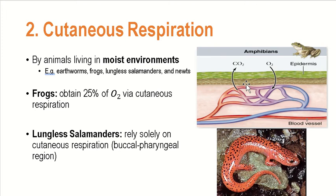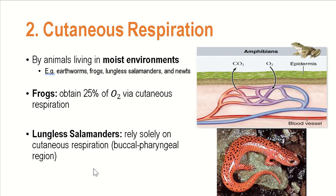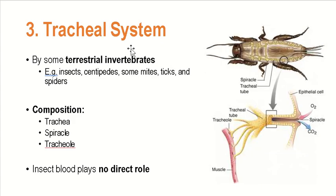You have to take note that the integument of these organisms also has disadvantages. First, their integument still has low permeability to gases, which is why water is strictly needed. Second, even though thin, the integument still provides a large distance for the gas to cover. Thus, others have evolved organs dedicated for gas exchange, such as the tracheal system.